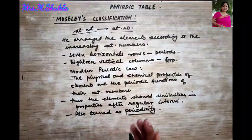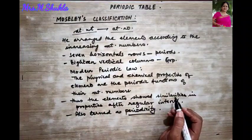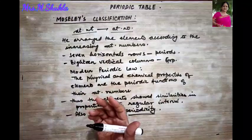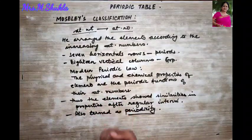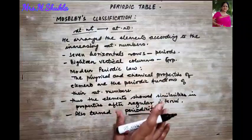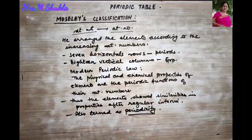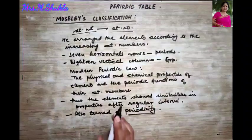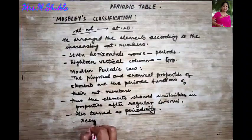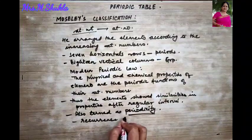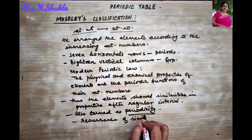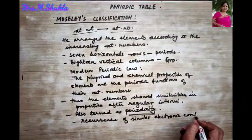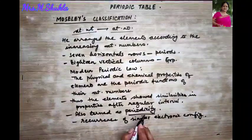Now, what is the reason for periodicity? What repeats after a regular interval? The electronic configuration is repeated — the reoccurrence of similar electronic configuration helps maintain periodicity in the elements. After definite intervals of atomic numbers, there is always a reoccurrence of similar electronic configuration. Therefore, we get periodicity.